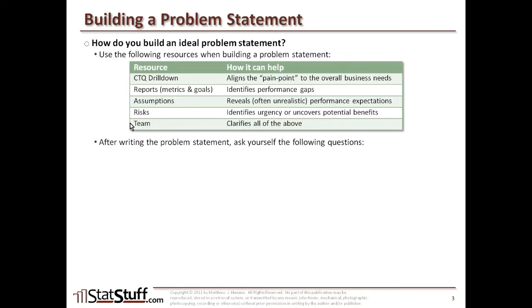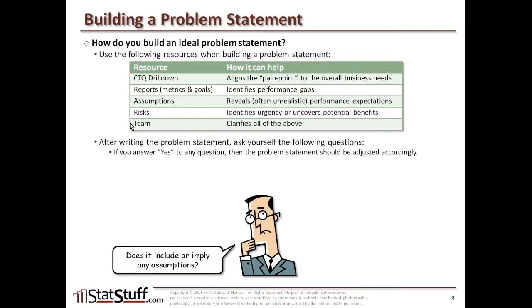After you've written your problem statement, there are a few questions I recommend you ask yourself. If you answer yes to any of these, go back and adjust your problem statement. If you can answer no, you probably have a good one. First: does the problem statement include or imply any assumptions? If so, fix your problem statement. This is different from key assumptions used when you don't have a clear metric — but any other implied assumptions should definitely be removed.